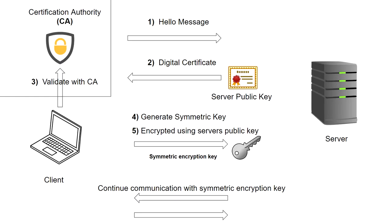The first step in the TLS handshake is the Client Hello message. The Certificate Authority shows that its certificate is in the exchange. There is a public key in the exchange. The Client Hello is the first of several steps. If you have a certificate in the authority list, you validate it. Then generate a symmetric key, and encrypt it using the server's public key.